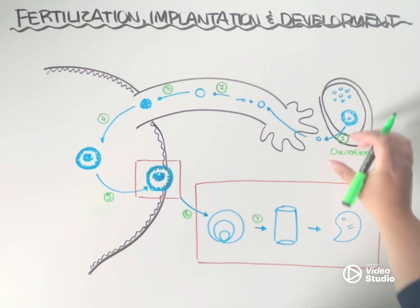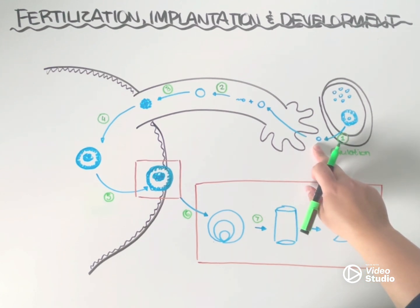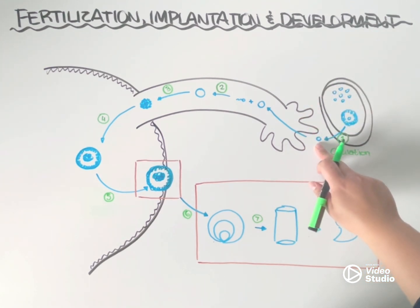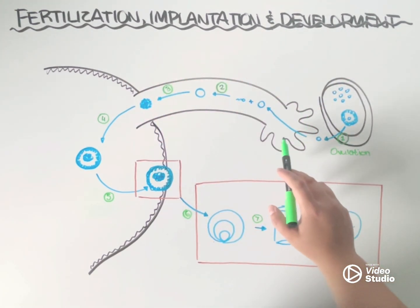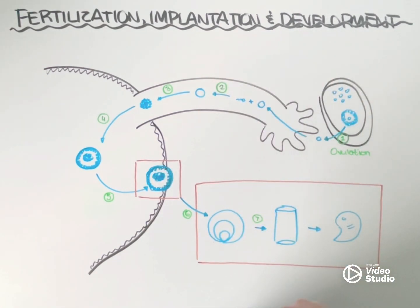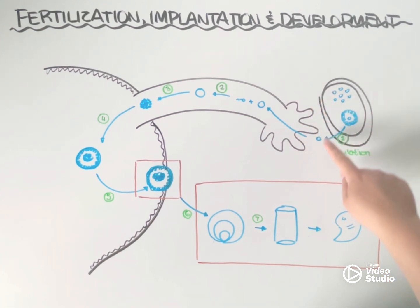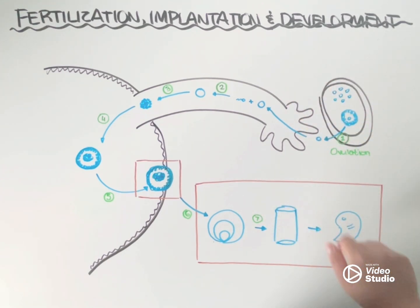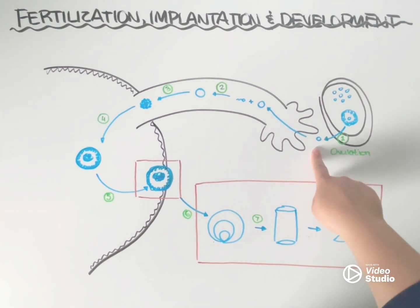Without ovulation, none of the other events could happen. Once the egg is released from the ovary, it enters this space here — and technically the ovaries are not directly connected to the fallopian tubes. So the fallopian tubes have these little finger-like projections called fimbria, which help sweep that ovulated egg up into the fallopian tube. If that process doesn't happen, a sperm could actually fertilize an egg outside of the uterus and implant into this extra-uterine space — in which case we would consider that to be an unviable pregnancy, often known as an ectopic pregnancy.